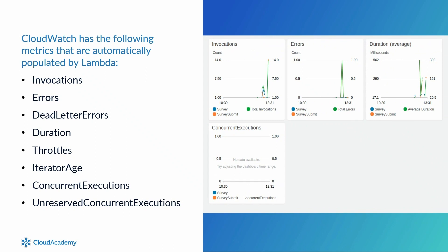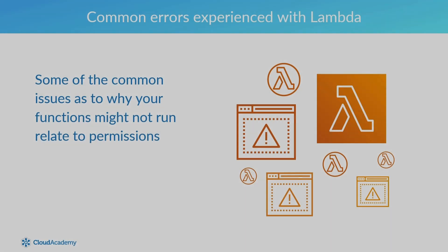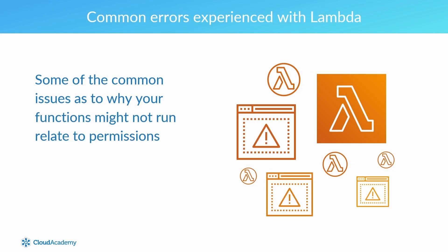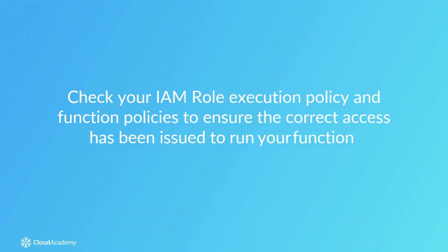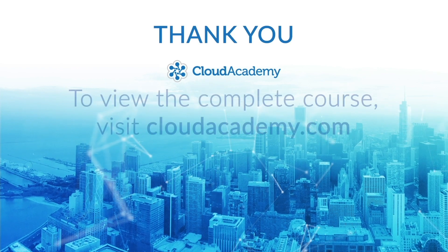By utilizing these metrics published into CloudWatch, you are able to maintain an overview of your functions and identify any unexpected errors. Using the features of CloudWatch, you can easily create a dashboard relating to your functions. Common issues as to why your function might not run relate to permissions — you should check your IAM role execution policy and function policies to ensure the correct access has been issued to run your function. Now we have a clear understanding of what is required, let's get started with the training.